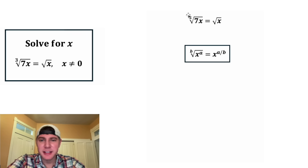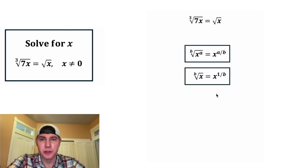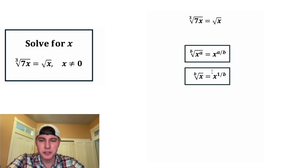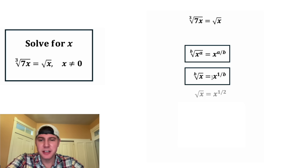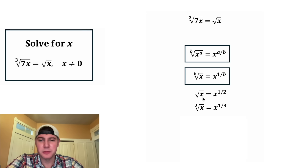And in this specific case, there is no exponent, so we can actually use this version of the notes. The bth root of x equals x to the power of one over b. So for example, the square root of x would be x to the power of one half.